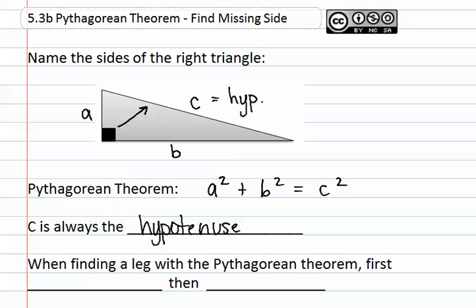When finding a leg with the Pythagorean Theorem, you must first isolate, and then you will take the square root. What you are isolating is either A squared, B squared, or C squared. So you are isolating one of the variables. It is the variable that you do not know.